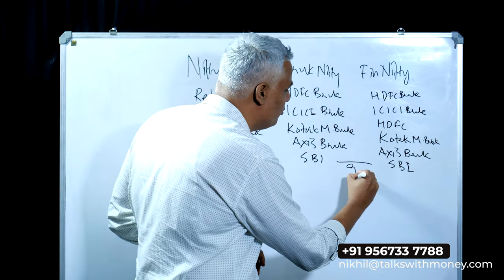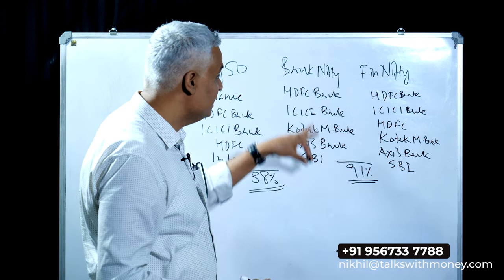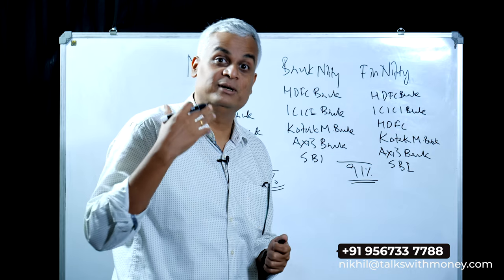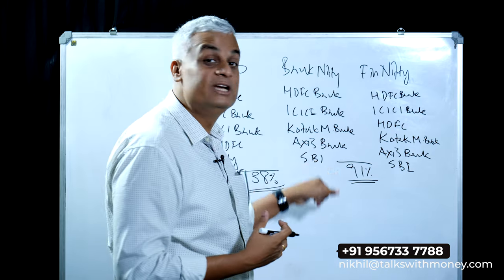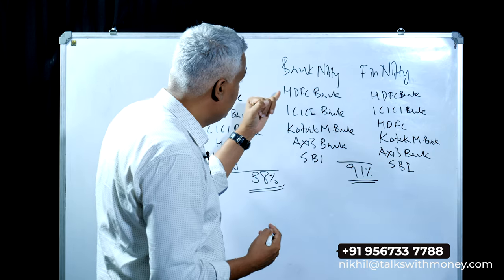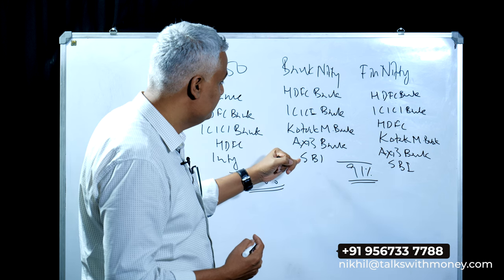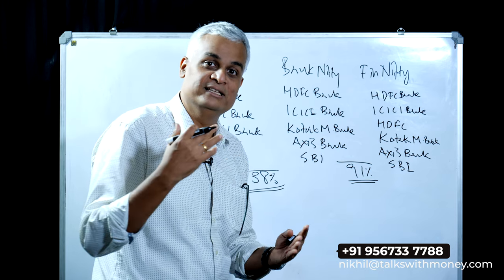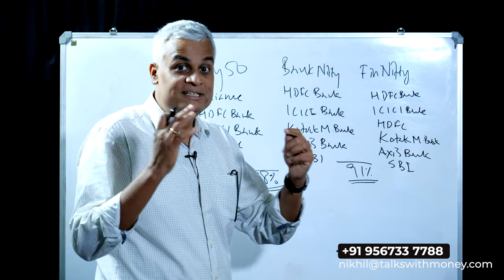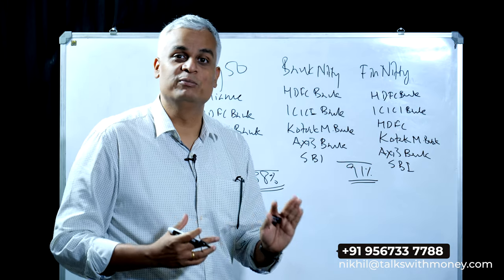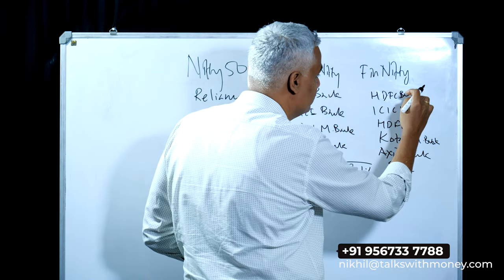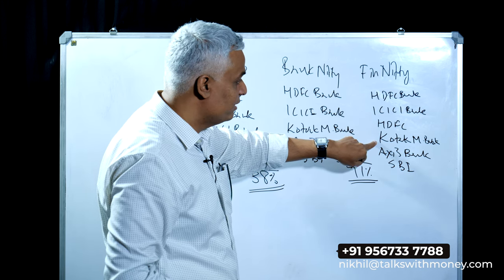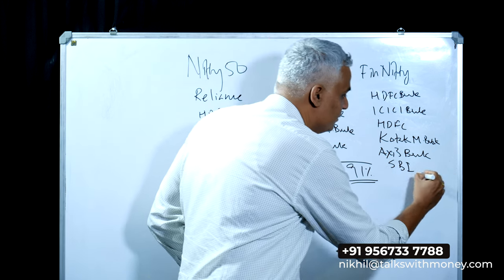For Bank Nifty and Fin Nifty, the key components include HDFC, ICICI, Kotak Mahindra, Axis Bank, and SBI. These are the exact price components for us. Fin Nifty also includes HDFC and ICICI, along with Kotak Mahindra Bank, Axis Bank, and SBI.